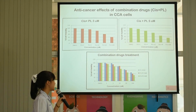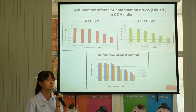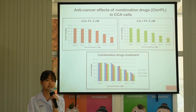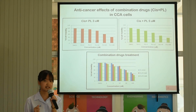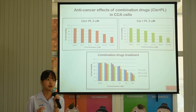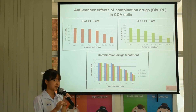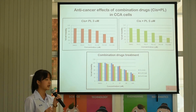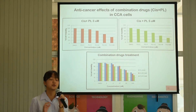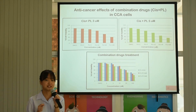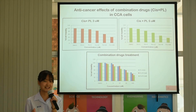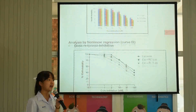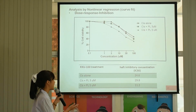Next, I investigated the anti-cancer effects of the combination treatment in CCA cell lines. I chose PL at 3 or 5 µM combined with various concentrations of Cisplatin. Piperlongumine was found to enhance the anti-cancer effects of Cisplatin in CCA cell lines. The result was confirmed by IC50 values.